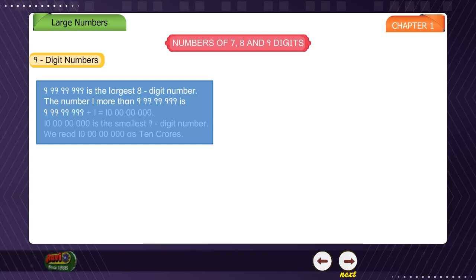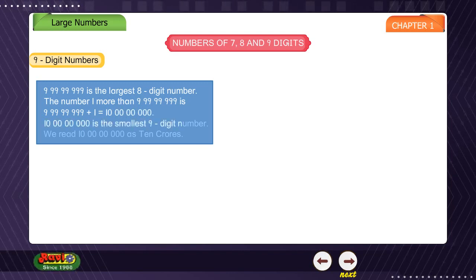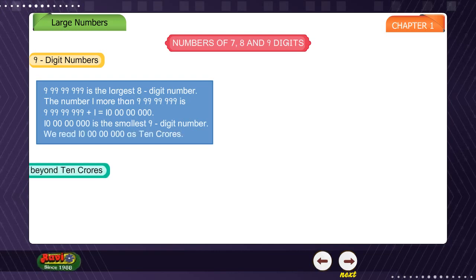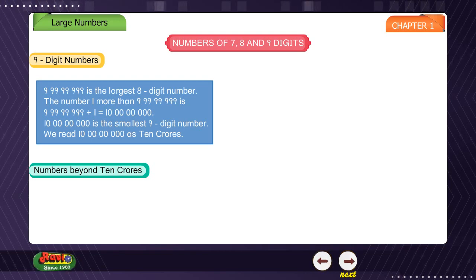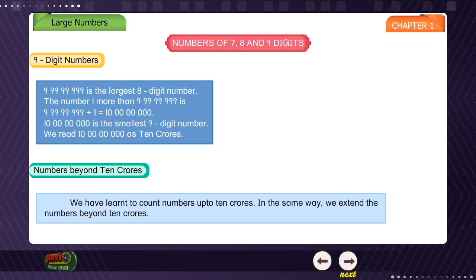99,99,99,999 + 1 = 10 crores. 10 crores is the smallest 9-digit number, read as 10 crores. Numbers beyond 10 crores: we have learned to count numbers up to 10 crores. In the same way we extend the numbers beyond 10 crores.